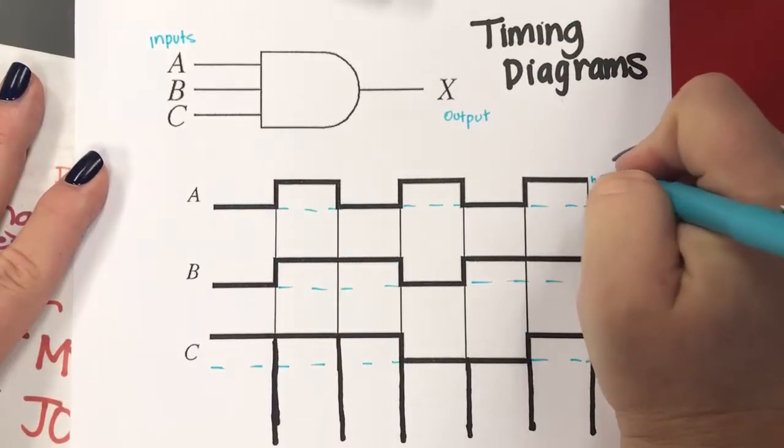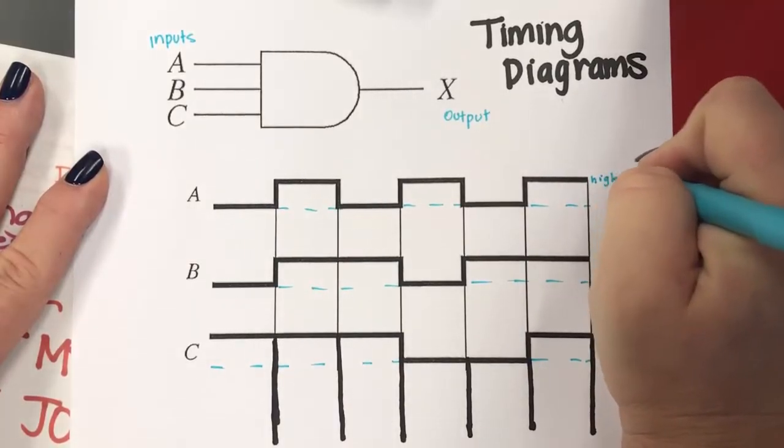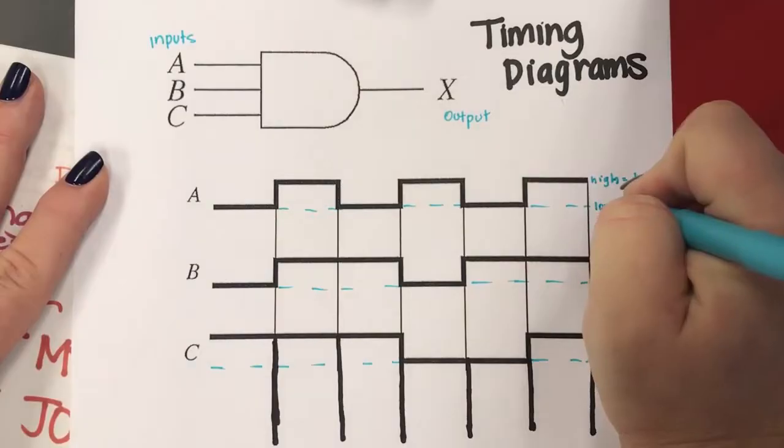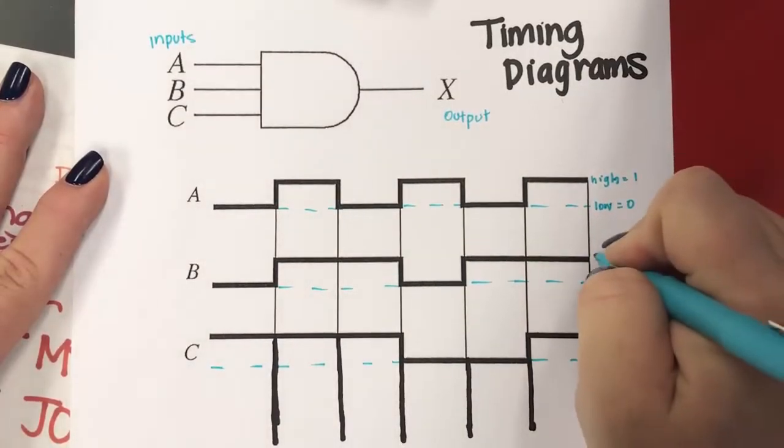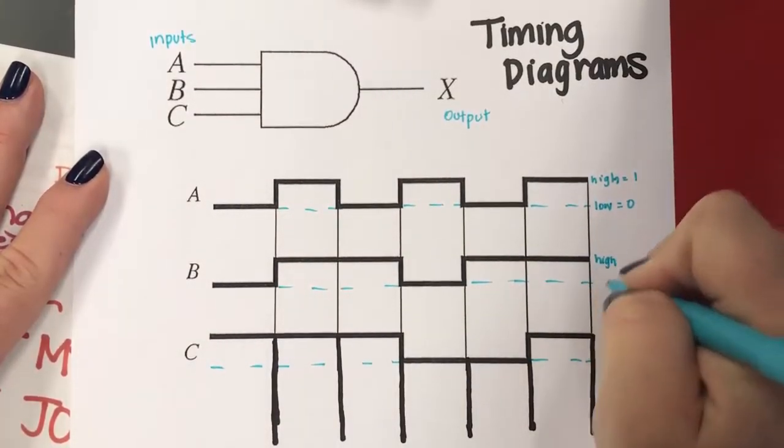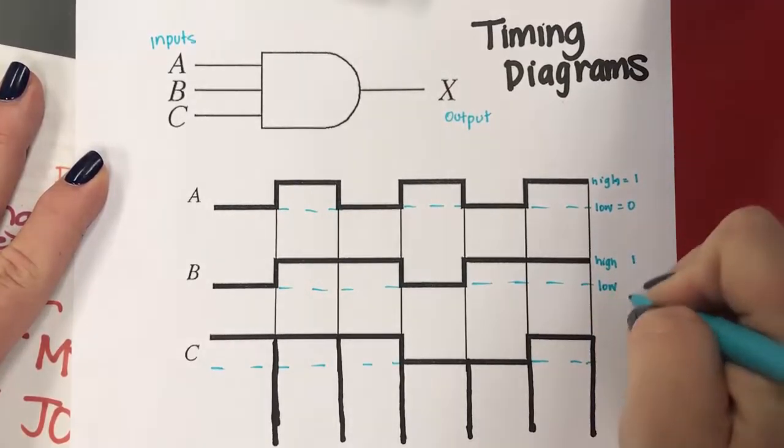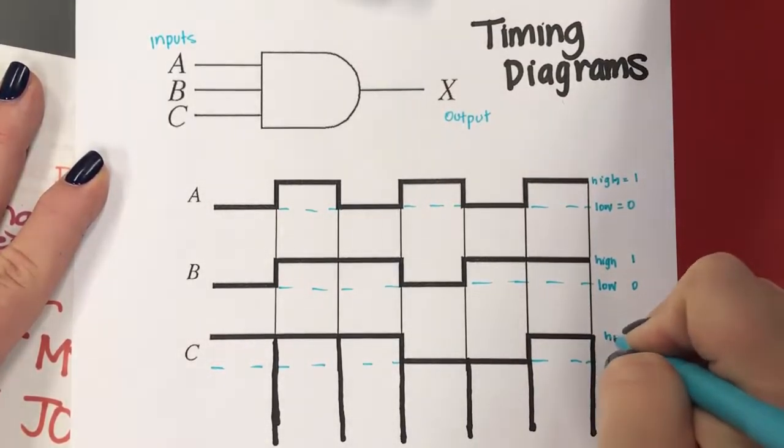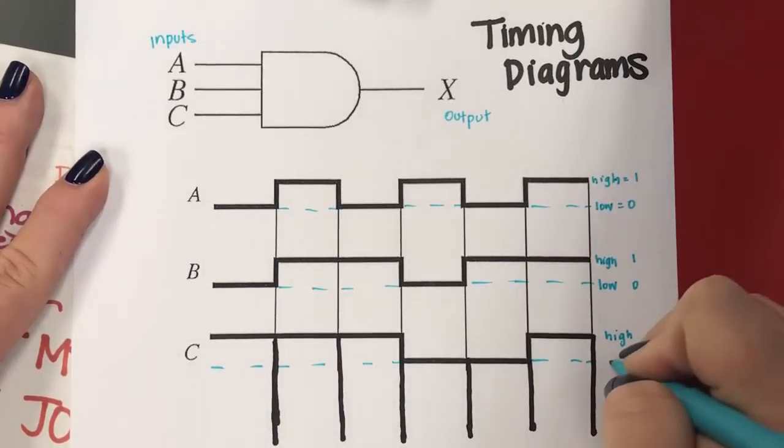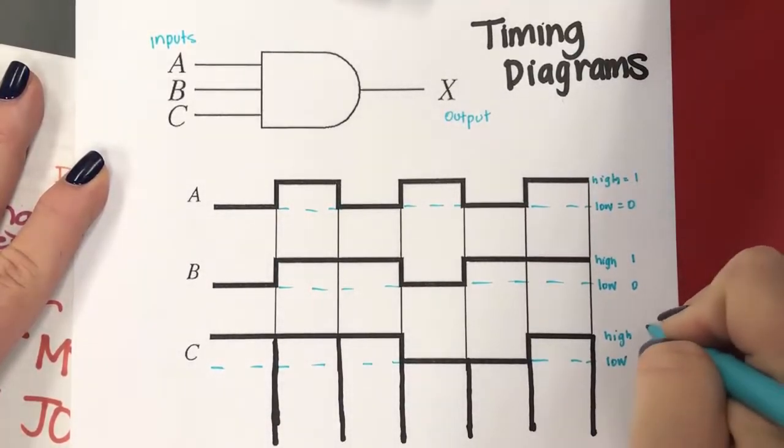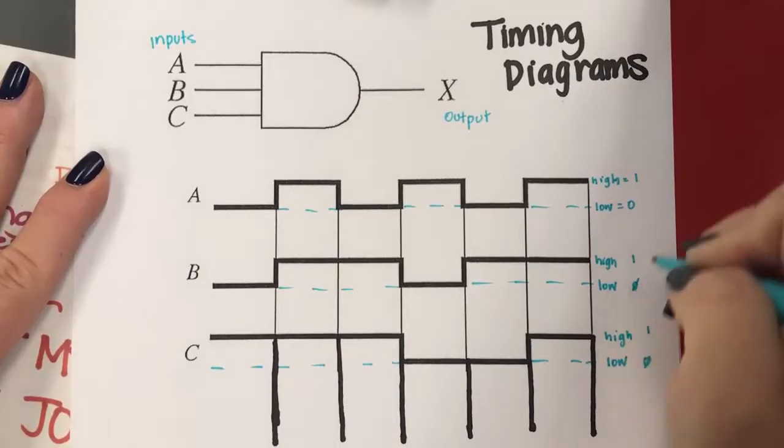So this would be high, and that would be equal to one, and this would be low, and that would be a zero. So this would be high here. This would be low. Same here.